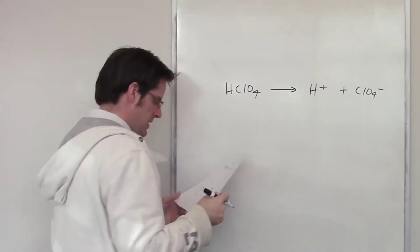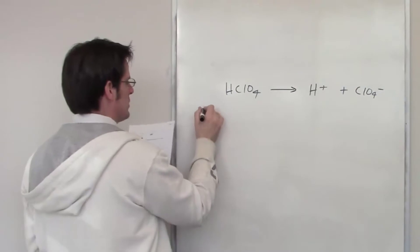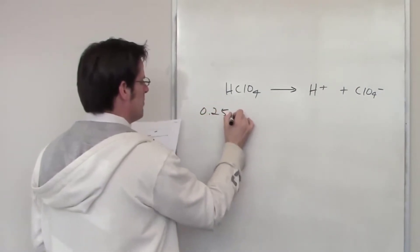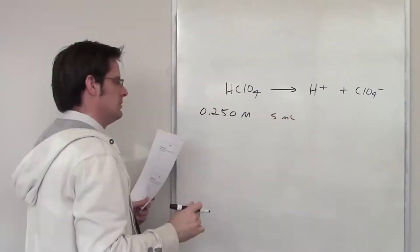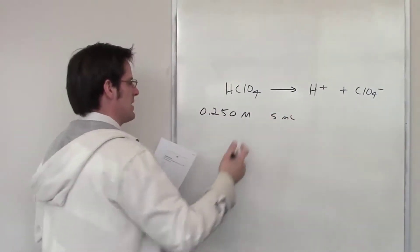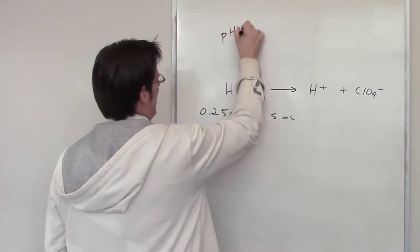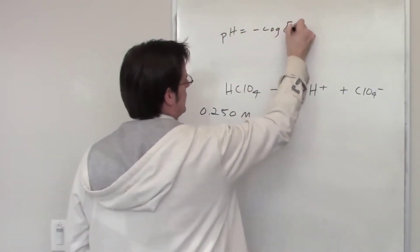It tells me that I have a solution of this that is .250 molar in concentration, and I add 5 milliliters of it. That's interesting information. Why do I even care? Well, the original question is actually asking me to determine what the pH of this solution is.